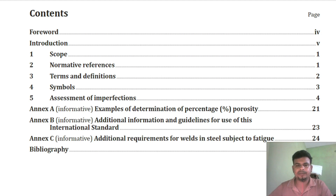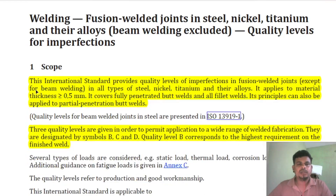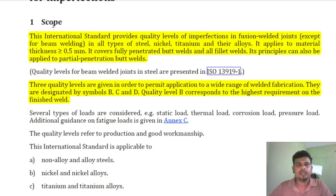I request all of you to please watch the full video. This video will be somewhat longer and may be a bit boring, but if you want to learn something you should watch it fully. So: fusion welded joints in steel, nickel, titanium and their alloys — beam welding excluded — quality levels for imperfection. The scope defines what this code book covers.